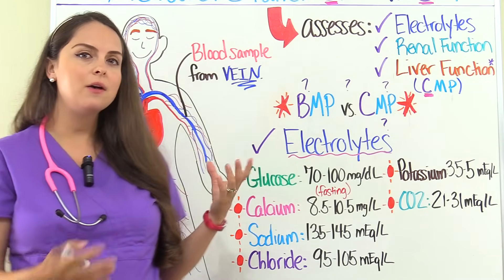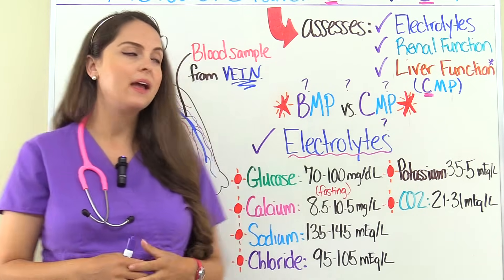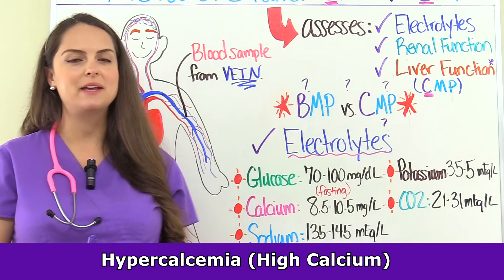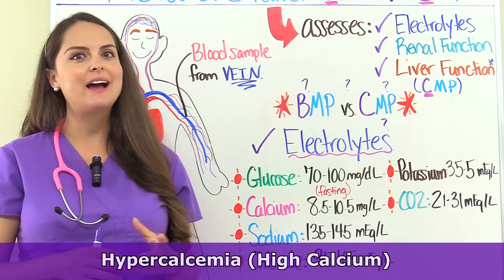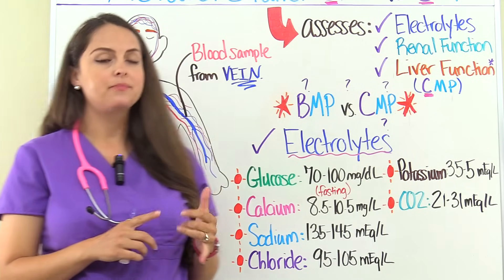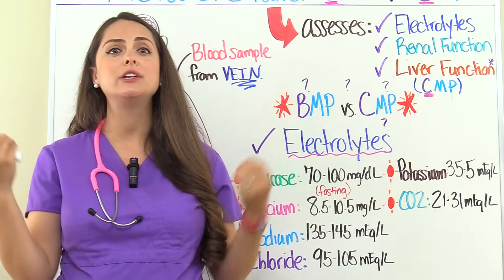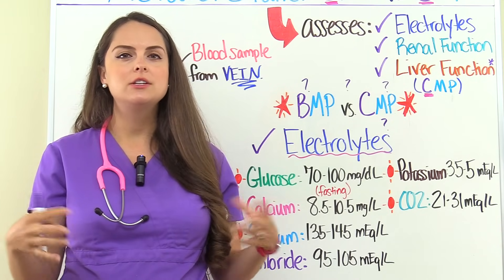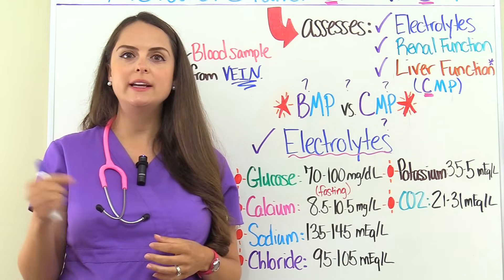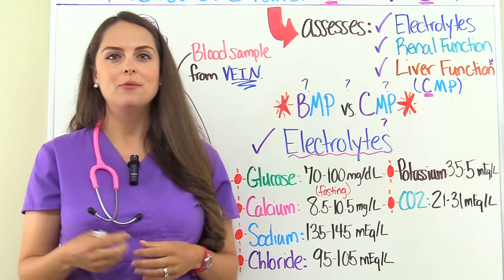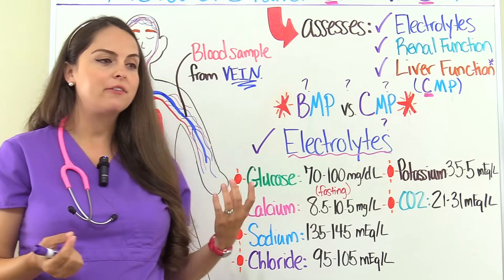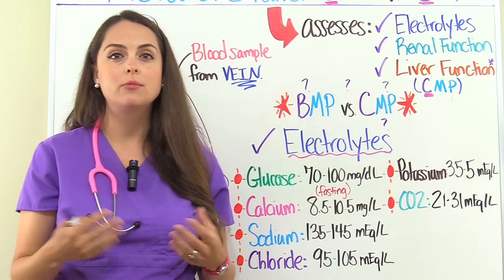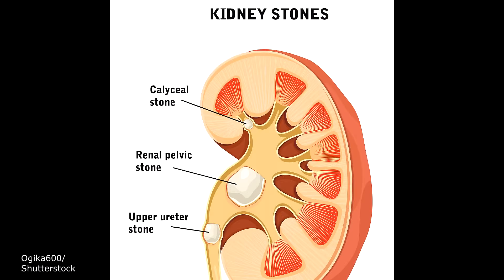On the flip side, a really high calcium level is termed hypercalcemia. What could cause this? If a patient's parathyroid gland is overactive, we're keeping too much calcium in the blood. Or if a patient has a really high intake of vitamin D, we're going to increase how much calcium we absorb. Whenever a patient has a high calcium level, you definitely want to monitor their renal status because they're at risk for kidney stones.